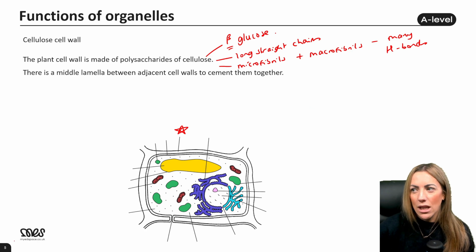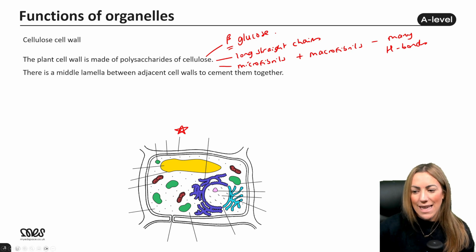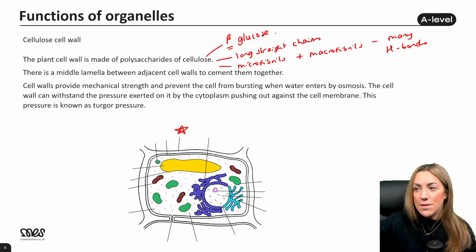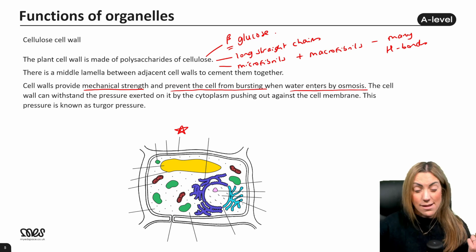There is a middle lamella between adjacent cell walls, so between the cell wall of one plant cell and the cell wall of the next, which cements them together. In terms of function, it provides mechanical strength. It prevents the cell from bursting when water enters by osmosis, whereas we know animal cells, because they don't have a cell wall, they can undergo cell lysis or burst when too much water moves in by osmosis.